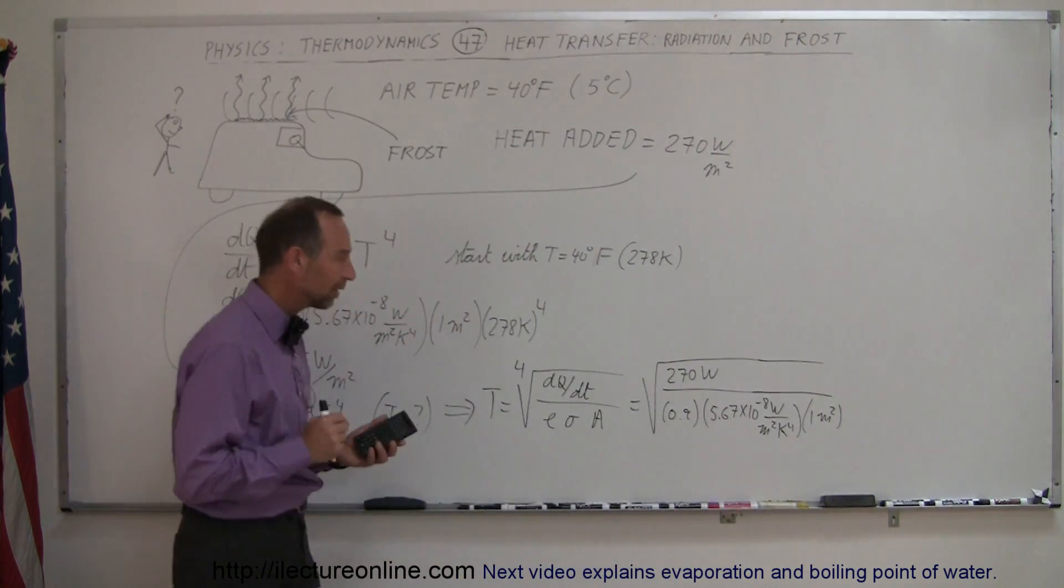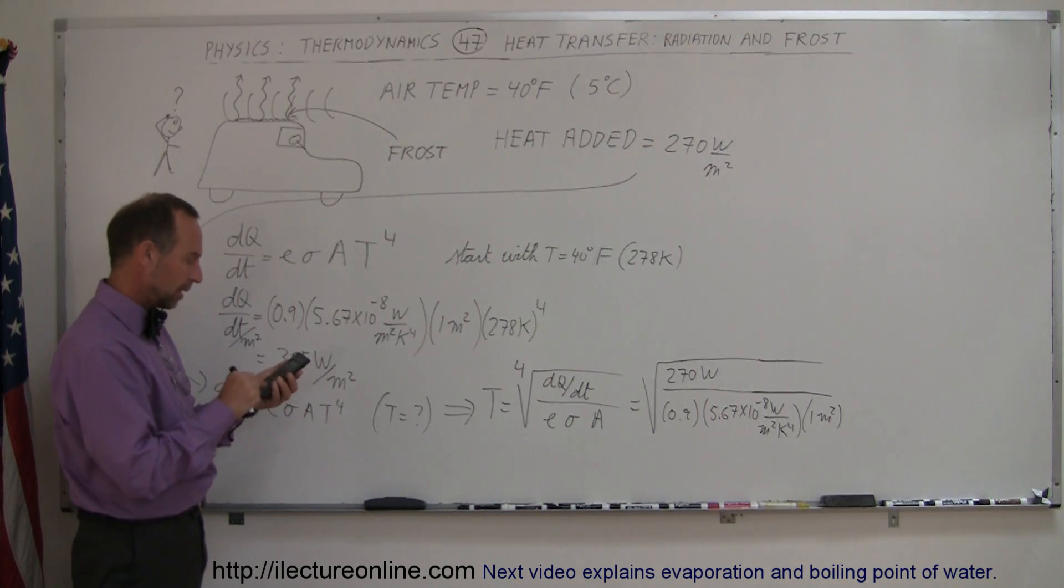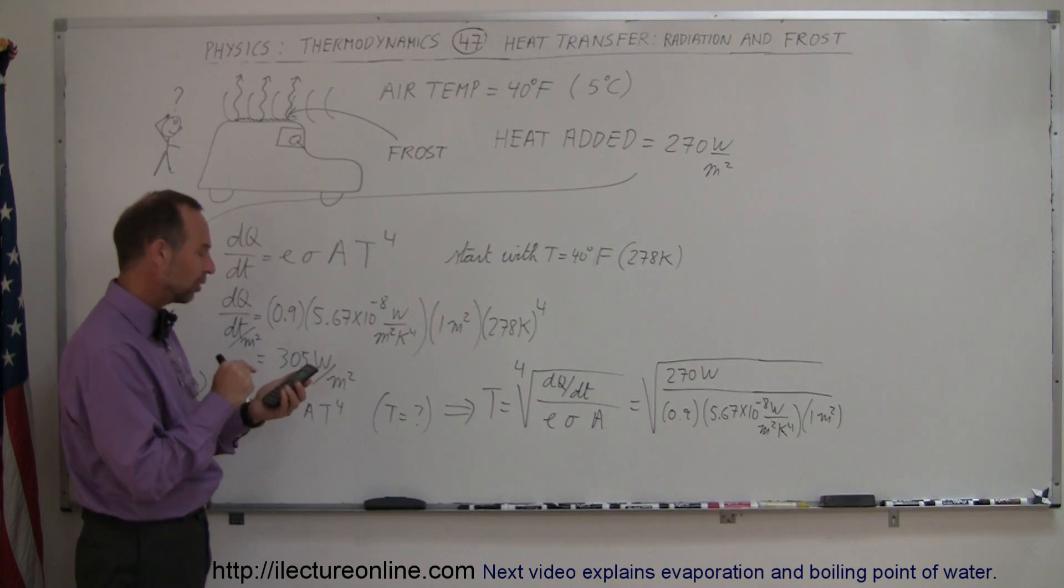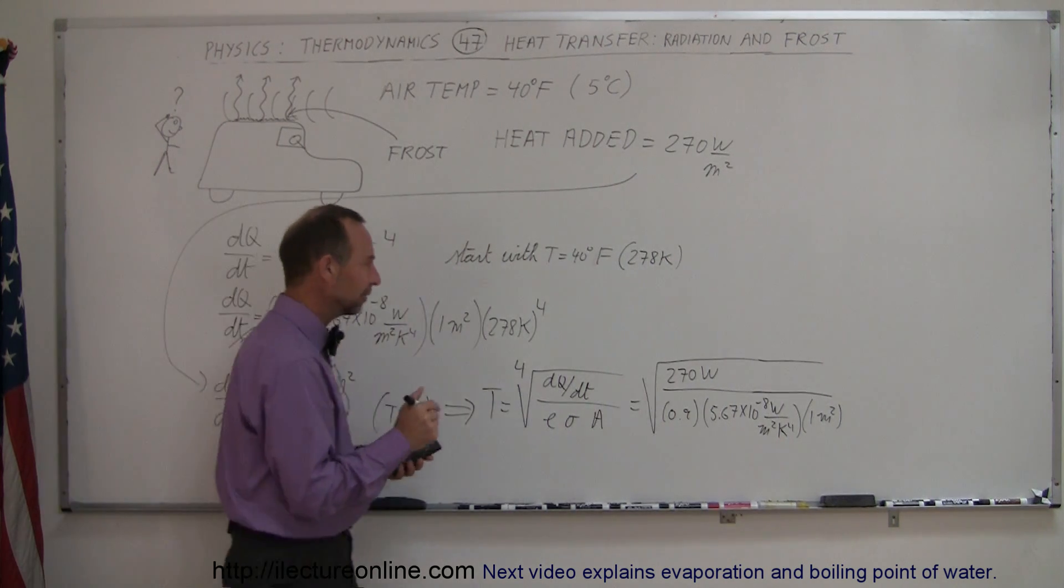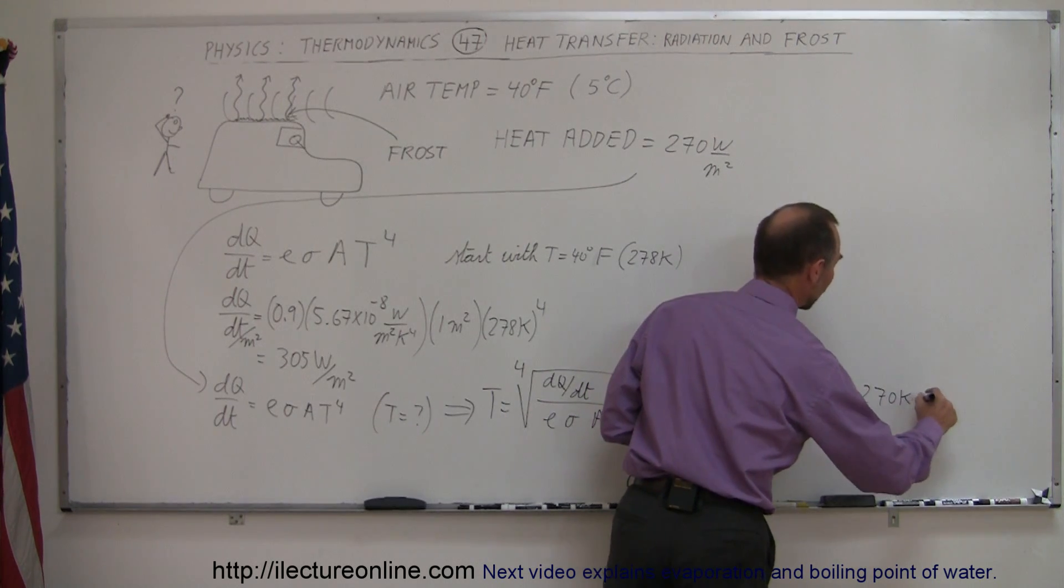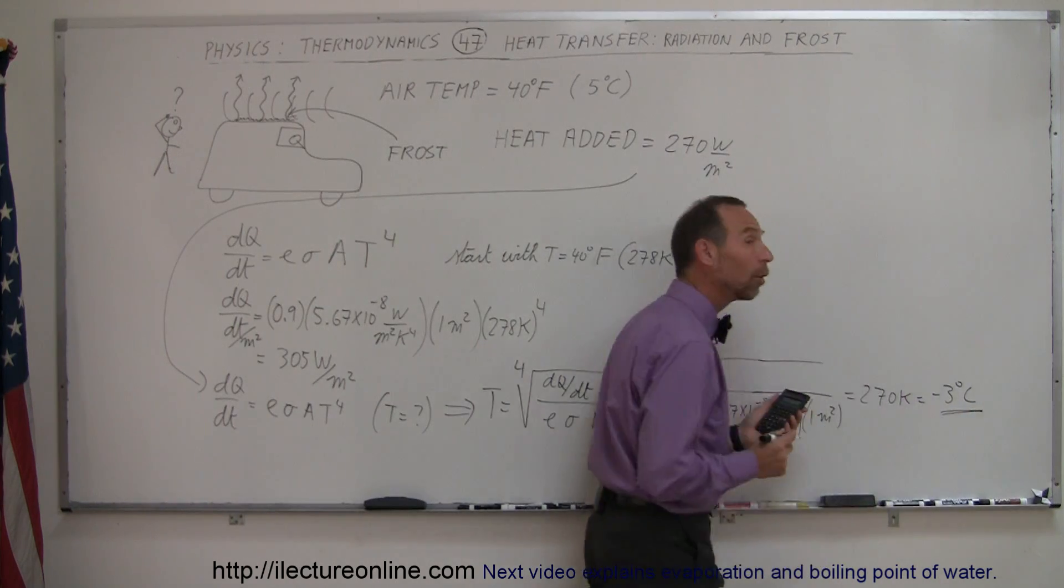So let's see what the equilibrium temperature would be. We have 270 divided by 0.9 divided by 5.67 times 10 to the minus 8, divided by 1, and then take the fourth root of that, which gives us 270 Kelvin - that's equal to minus 3 degrees centigrade, so definitely below freezing.